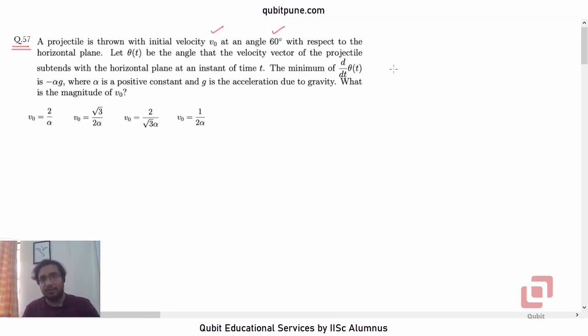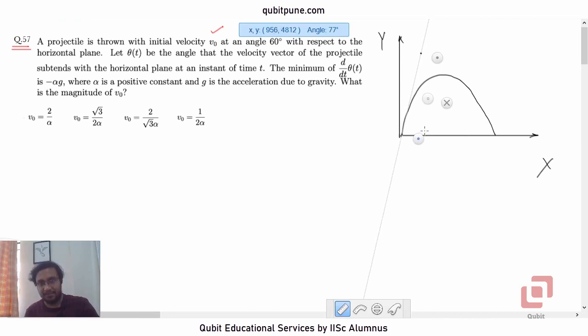This is a projectile motion problem. So, let us first draw the projectile or its trajectory rather. Y axis, x axis. Suppose this is the projectile's trajectory and our origin is here. So, this is the initial velocity vector v0 bar. How much is the angle that it makes with the horizontal plane? 60 degrees.